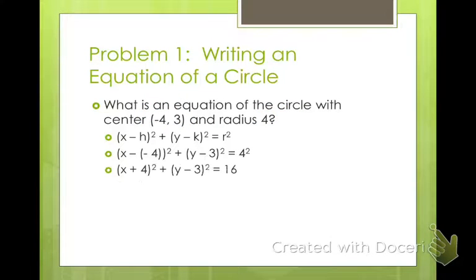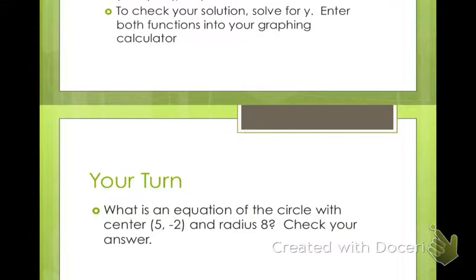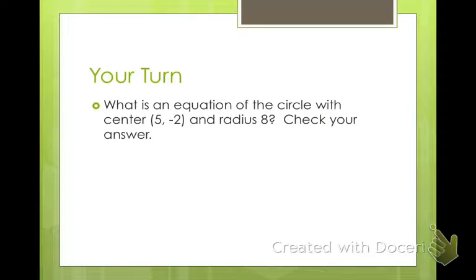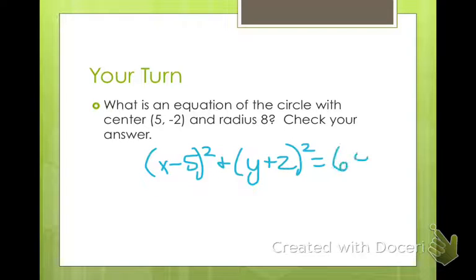If you took geometry last year, you should have seen this before. Why don't you go ahead and try this one really quick before I do. For this one, you should have got (x - 5)² + (y + 2)² = 64. Whatever these values are inside, this one's always associated with the x, this one's always associated with the y. We change their signs, and we always square the radius.